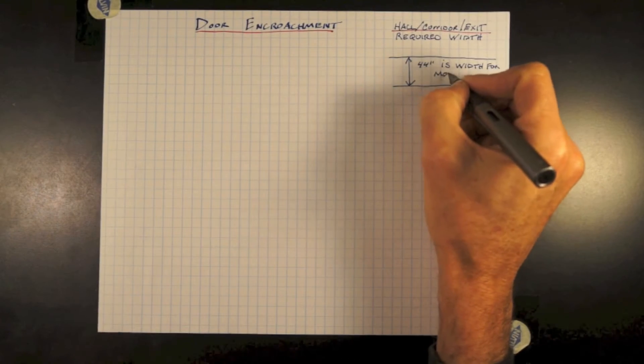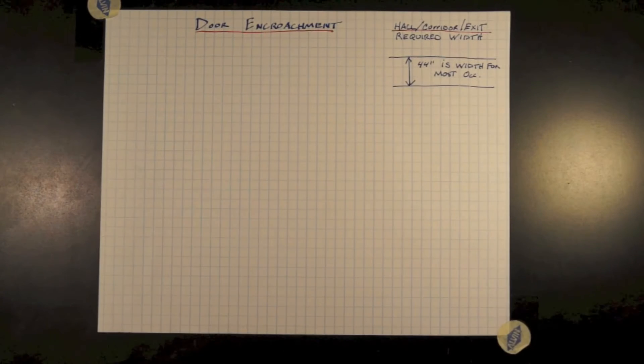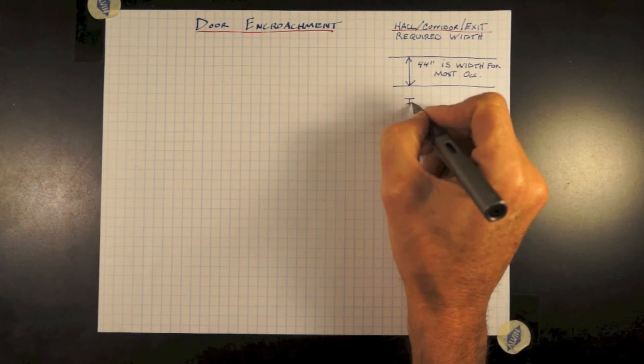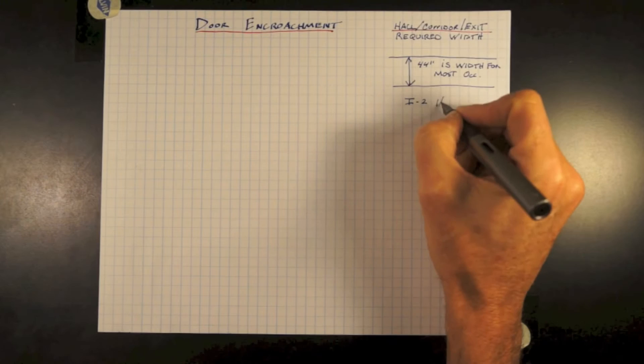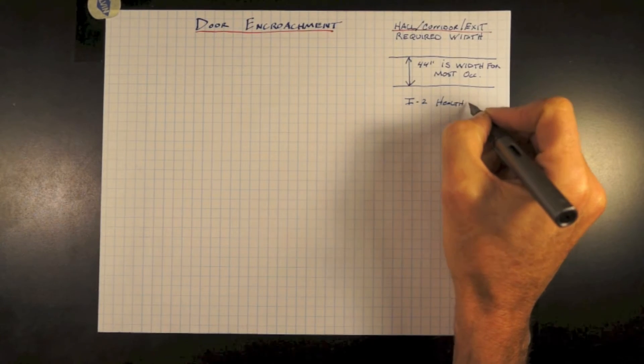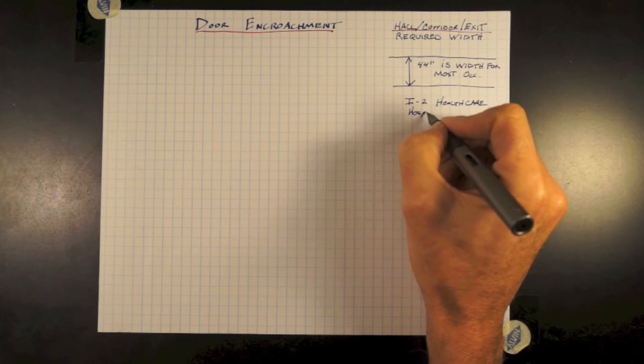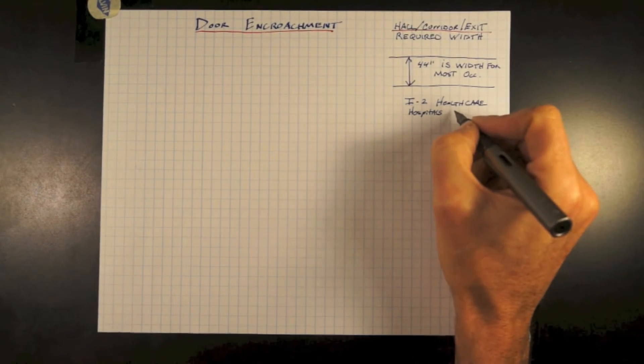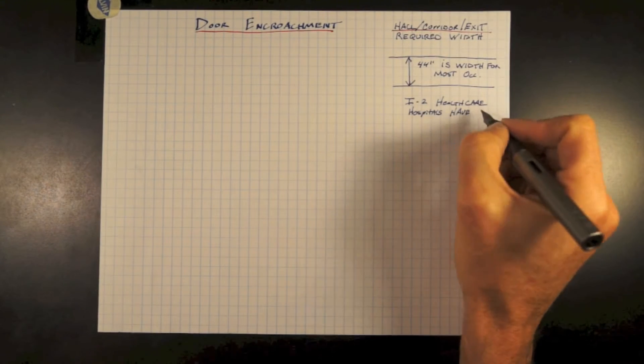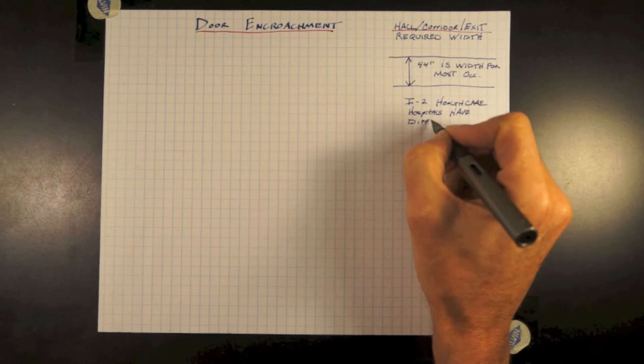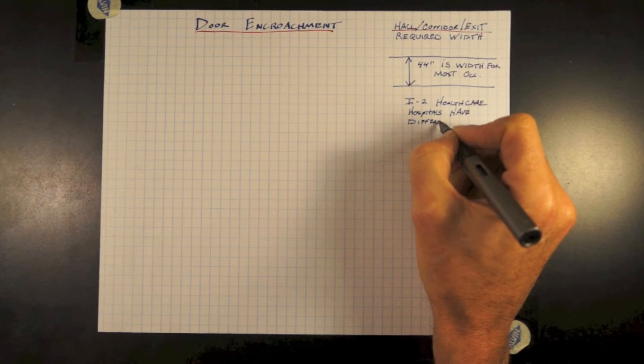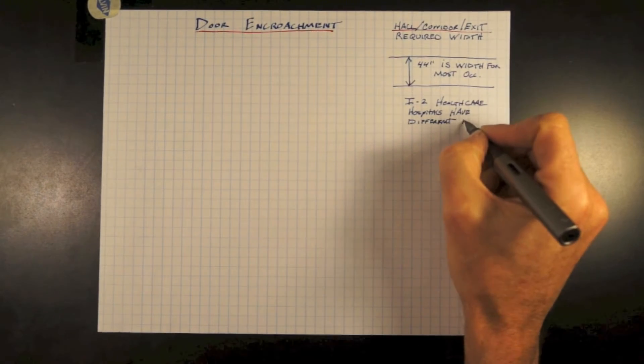This will help represent a corridor, hallway, or exit way. Your typical required width is 44 inches at most building types. Healthcare is different for one. There are a couple of others that are different as well.